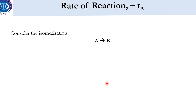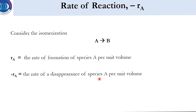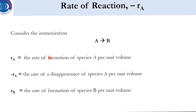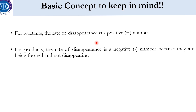Consider the isomerization reaction A → B. Simply r_A (without the minus) denotes the rate of formation of species A per unit volume per time. However, minus r_A means the rate of disappearance of species A per unit volume. And r_B represents the rate of formation of species B per unit volume. Key concepts: for reactants, the rate of disappearance is a positive number; for products, the rate of disappearance is a negative number because they are not disappearing — they are forming.